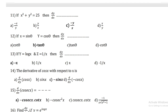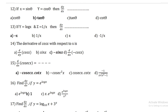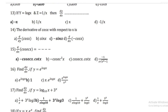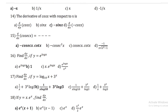d/dx (cosec x) = −cosec x · cot x. Find dy/dx if y = e^(log x); it is equal to 1. Find dy/dx if y = log₁₀x + 3ˣ; it is 1/(x · log 10) + 3ˣ · log 3.